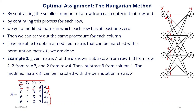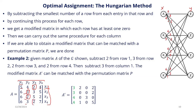After row reduction, we get row results: 3, 2, 0, 2 (subtracting 2); then 3, 0, 0, 2 (subtracting 3); then 4, 1, 0, 5 (subtracting 2); and so on. But we also need a zero in every column. So we look at columns — the smallest item in the first column is 3, so we subtract 3 from every item in that column, yielding 0, 0, 1, 1. After column reduction, the resulting A' matrix can be matched with the permutation matrix P.